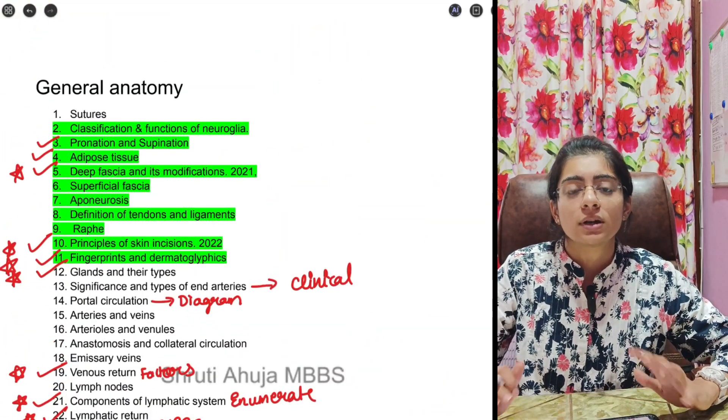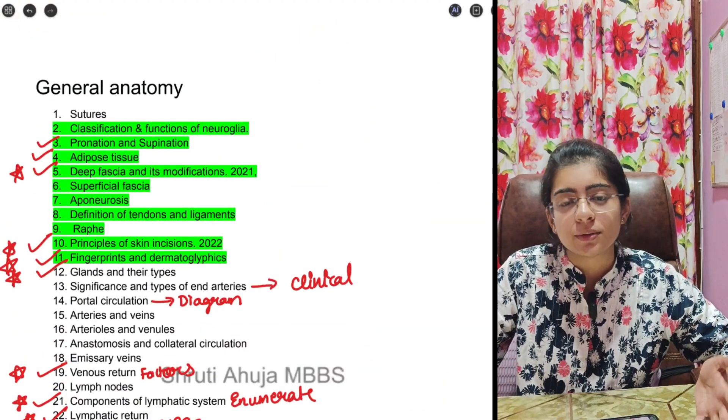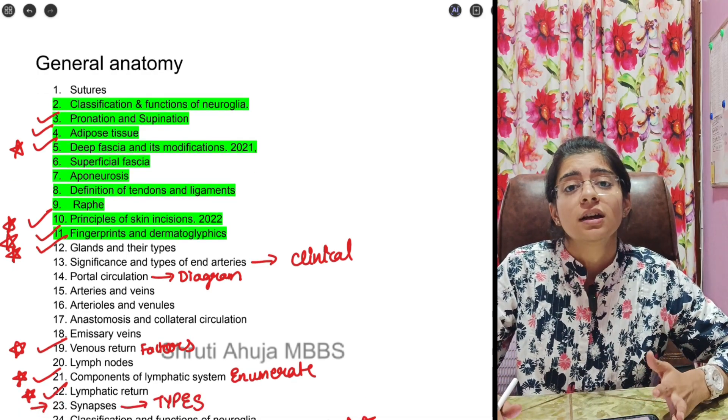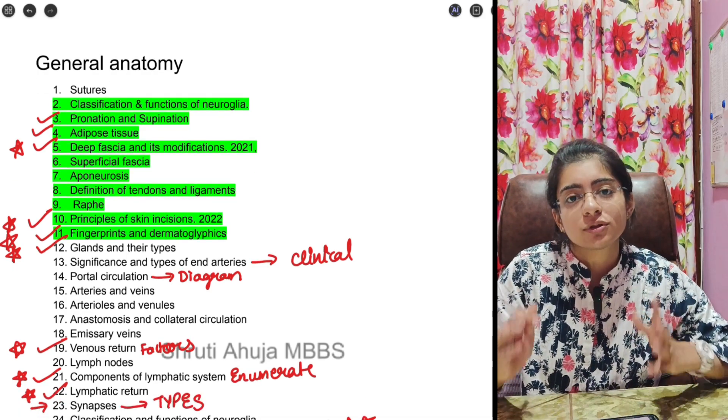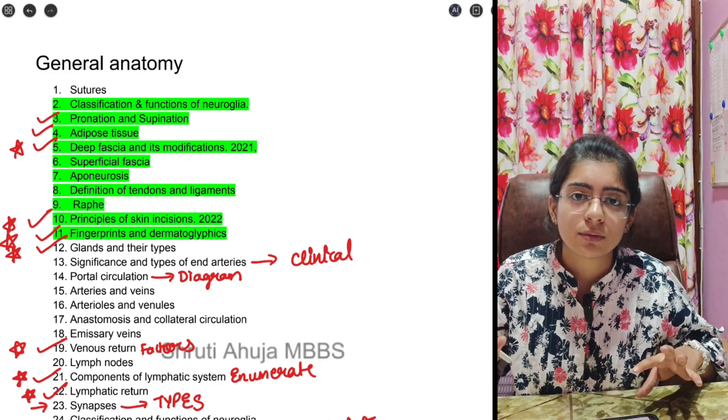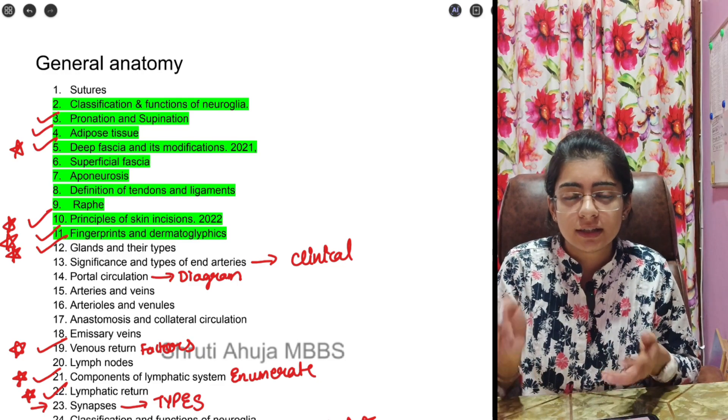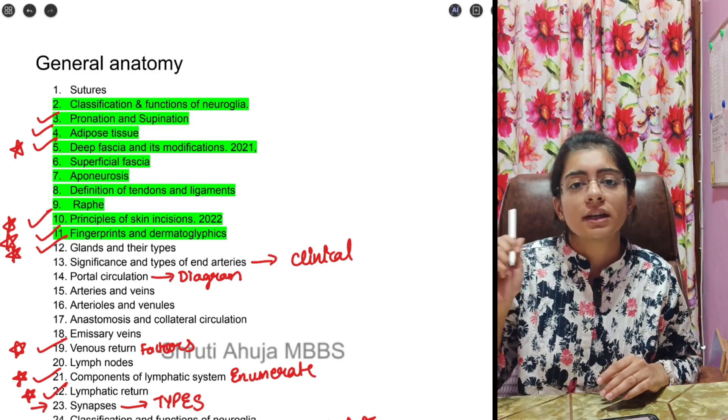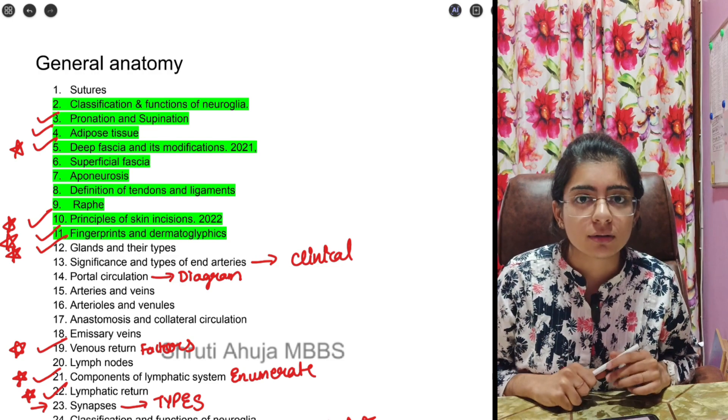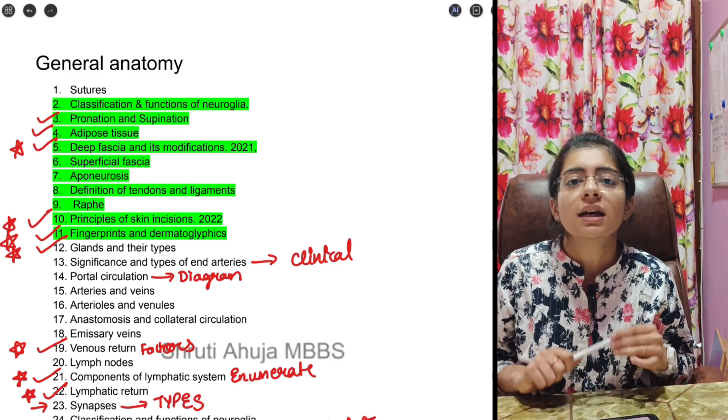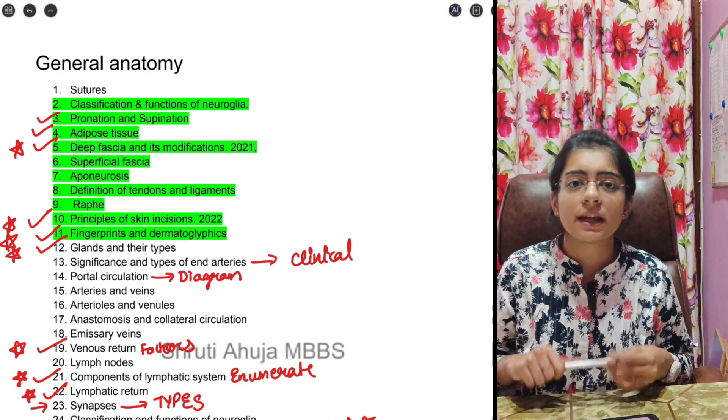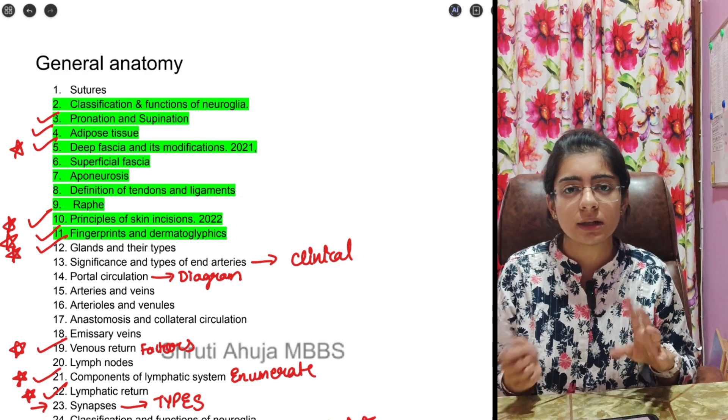I hope you understand everything about general anatomy PYQs, how to attempt them and what is the blueprint. I have already told in enumerate questions, explain why questions, there is a diagrammatic portion and there is a five mark question and sometimes there is a 10 marker question from osteocom. Osteocom video has already been uploaded, you can check out that also. All the important PYQs and that is also a nice area to score. Osteocom is sometimes 5 mark or 10 mark, it depends on college to college.